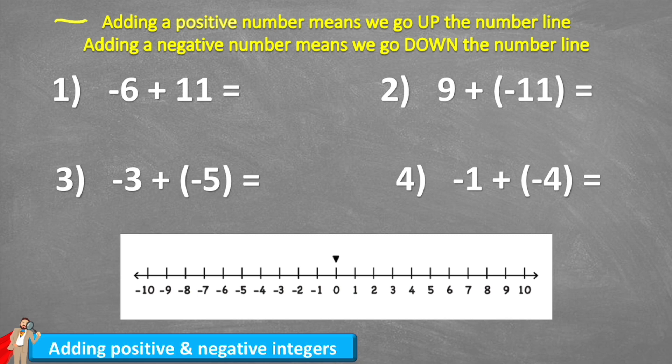The first one says adding a positive number means we must go up the number line, meaning we're going to get a greater value. And rule two says adding a negative number means we go down the number line, meaning our value gets less.